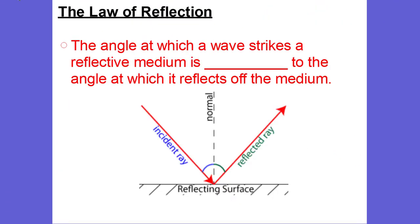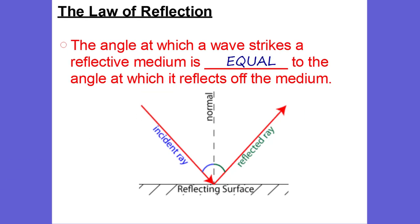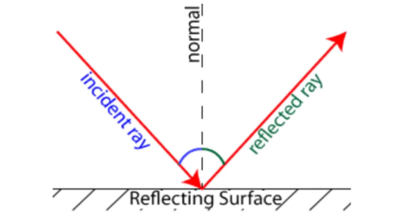And so we're going to first take a look at what's called the law of reflection. The law of reflection says the angle at which a wave strikes a reflective medium is equal to the angle at which it reflects off that medium. And something that I want you to see is we have what's called an incident ray. The ray that's coming in is called the incident ray. And so the angle that comes in is called the angle of incidence, and that angle of incidence is between the incident ray and the normal.